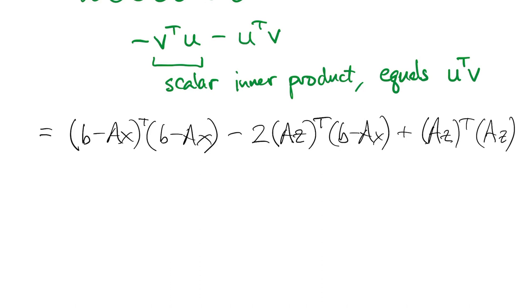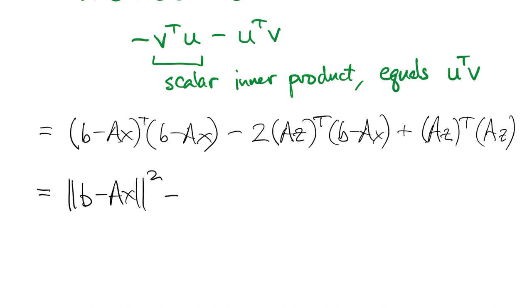Now again, using properties of two norms, this first term is the two-norm squared of b minus a x.